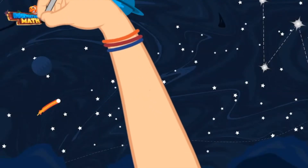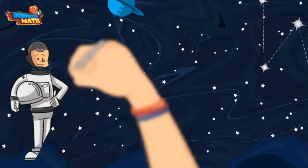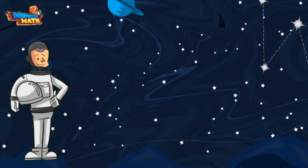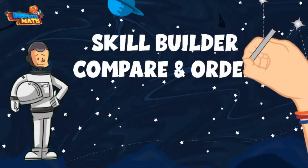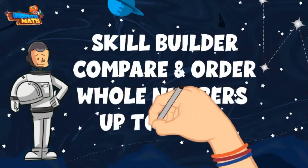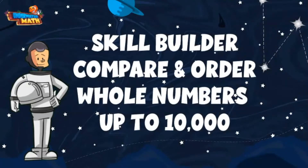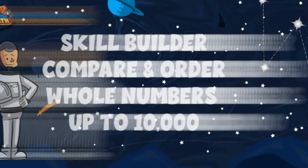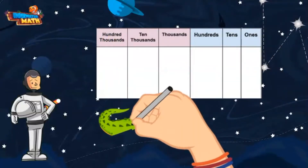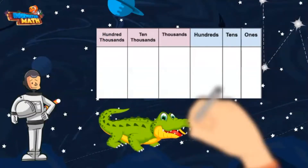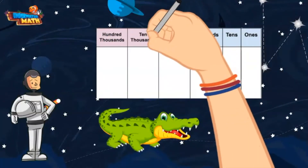Welcome back. I'm astronaut Steve and we are going to build up our skills here in space. This is the best place to learn how to compare and order whole numbers up to 10,000, and I have a few space friends along the way who can help us out.